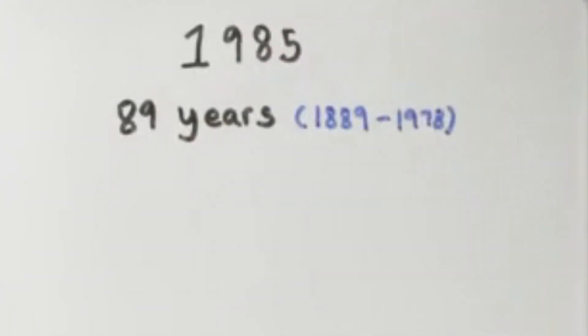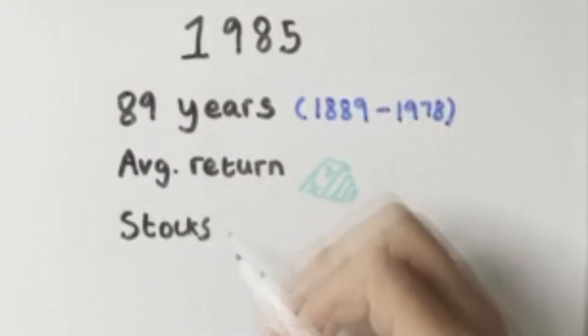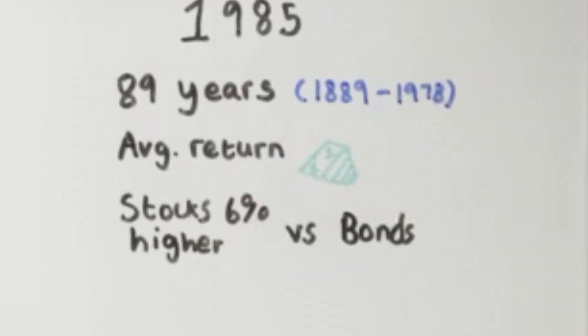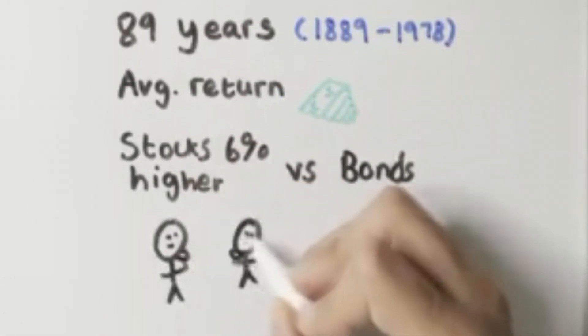In 1985, Merritt and Prescott decided to see if these beliefs were actually true. They found that over 89 years, the average return on stocks was 6% higher than the average return on government bonds. They had no way of explaining this.